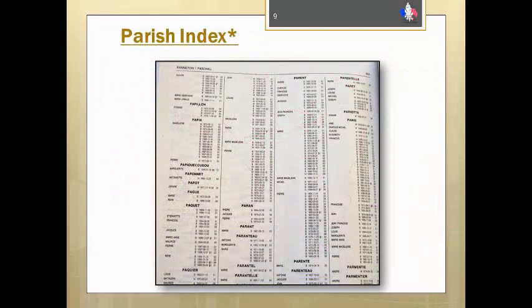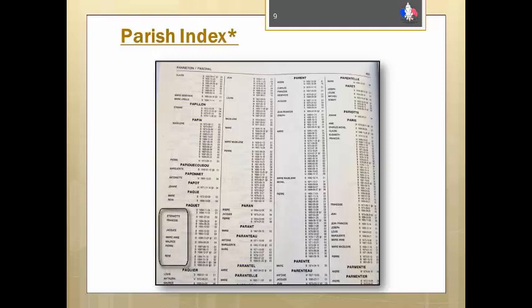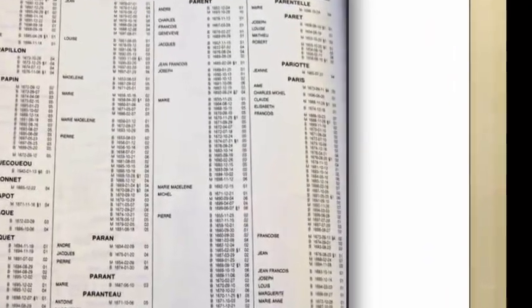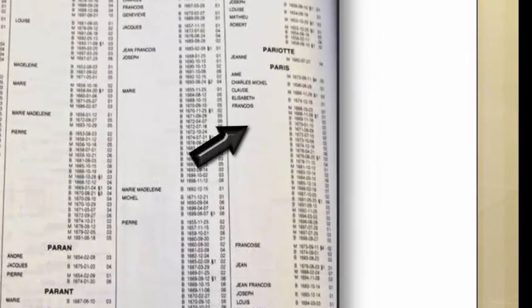Now here is a typical parish index page. Notice that the surnames are in bold print, followed by the given names for that surname found in that parish. If you see a given name with many events after it, it does not mean that those are all the same person. For example, these are all the François Parises found in these records, but until we dive into the records we can't be sure how many individual people are included in this list.